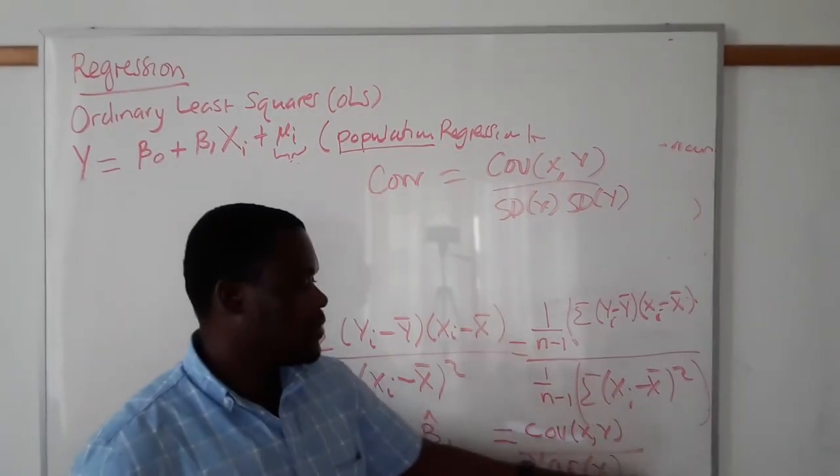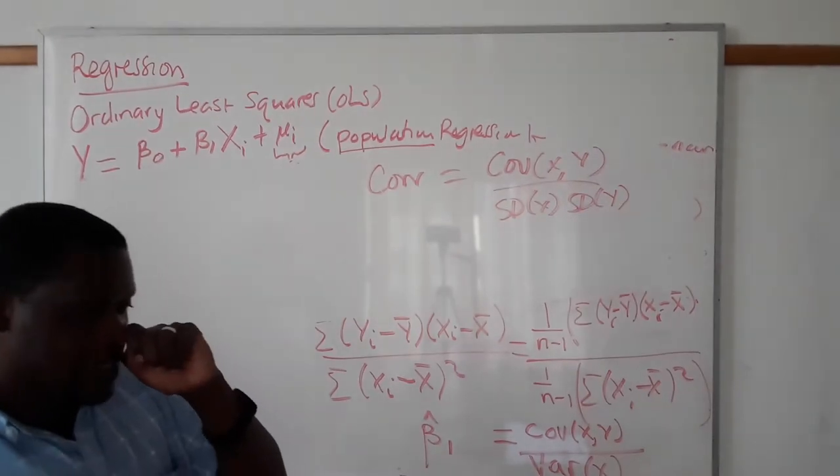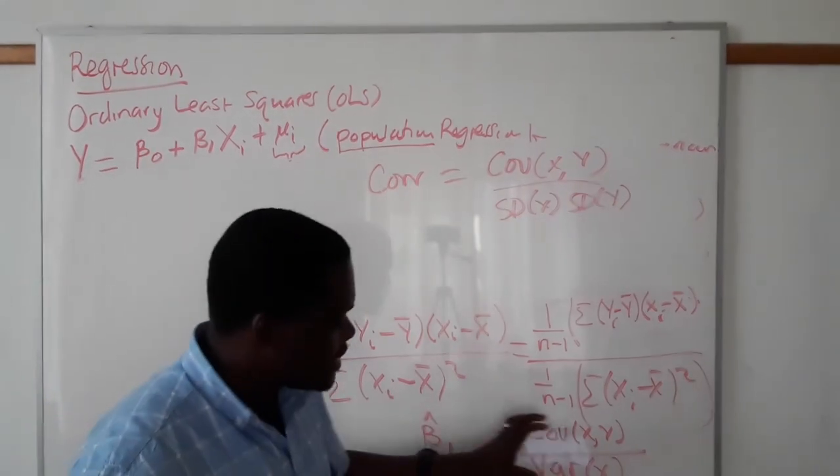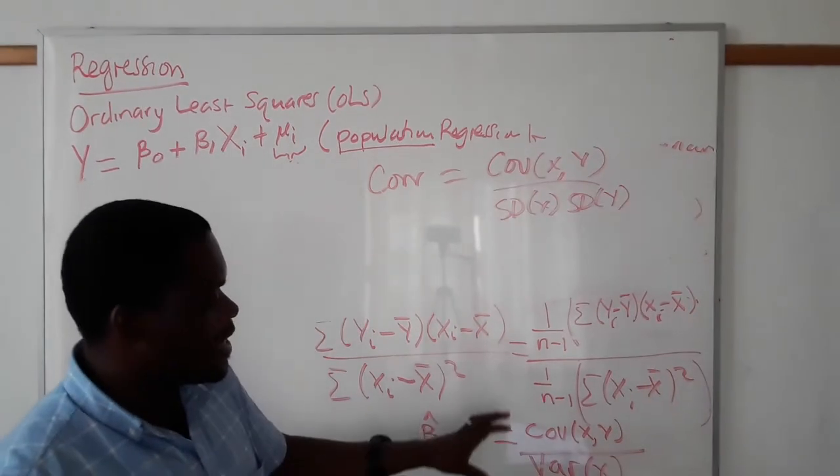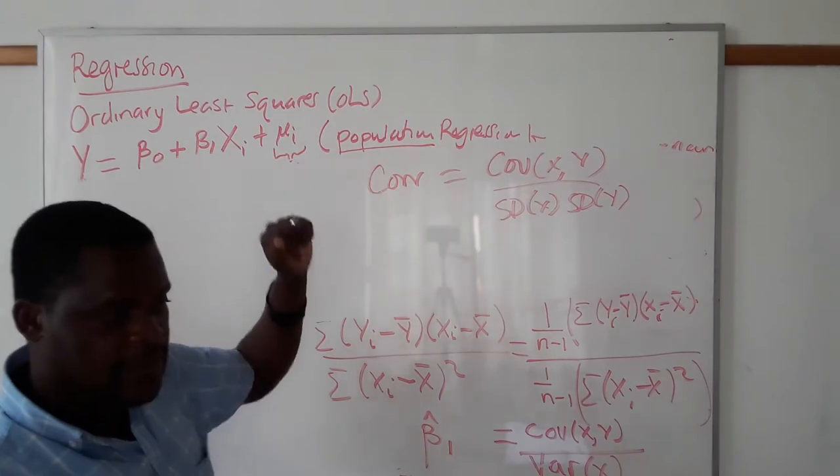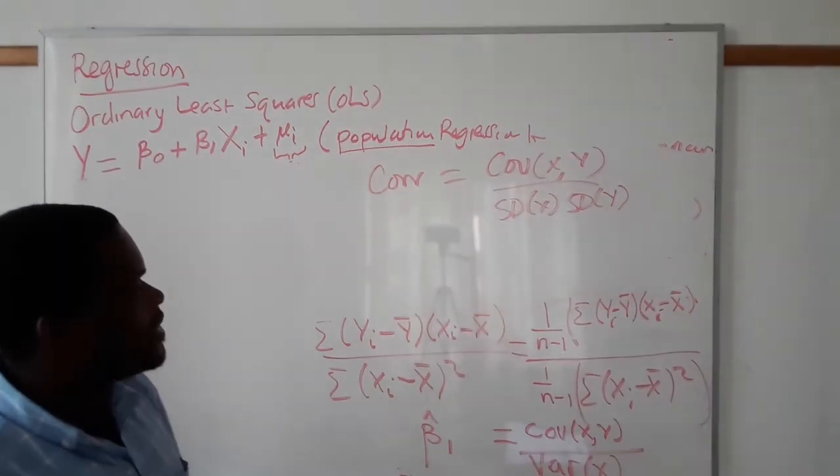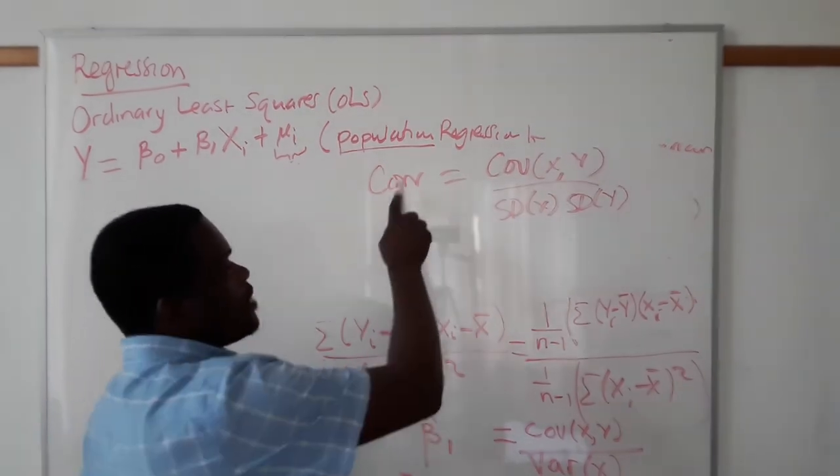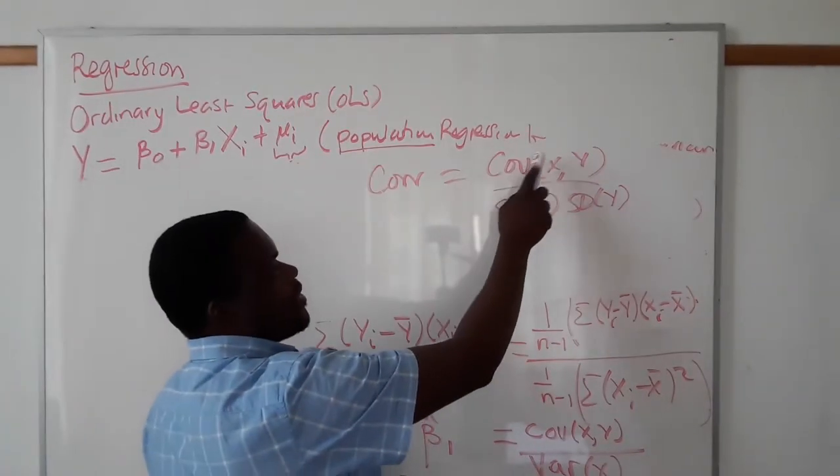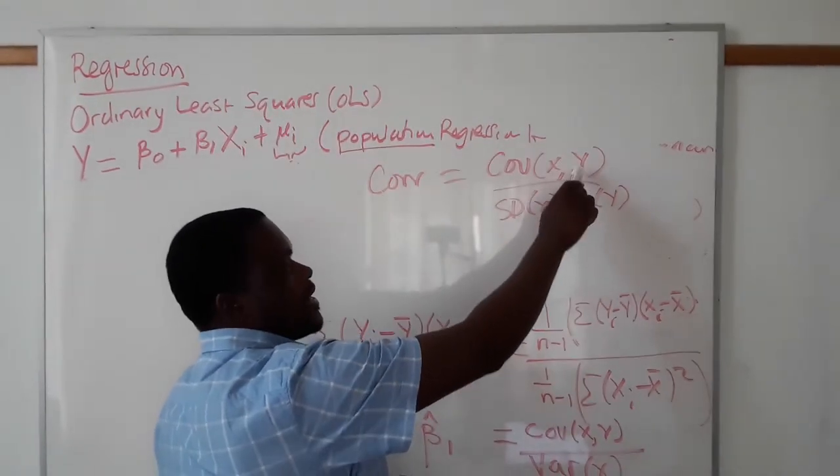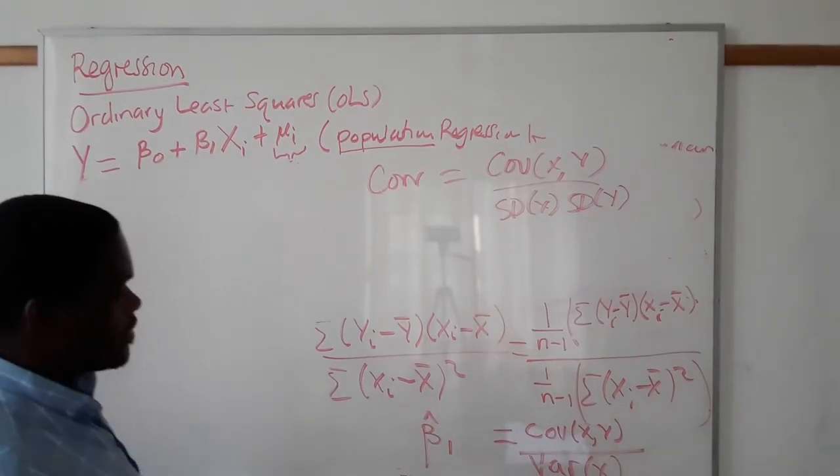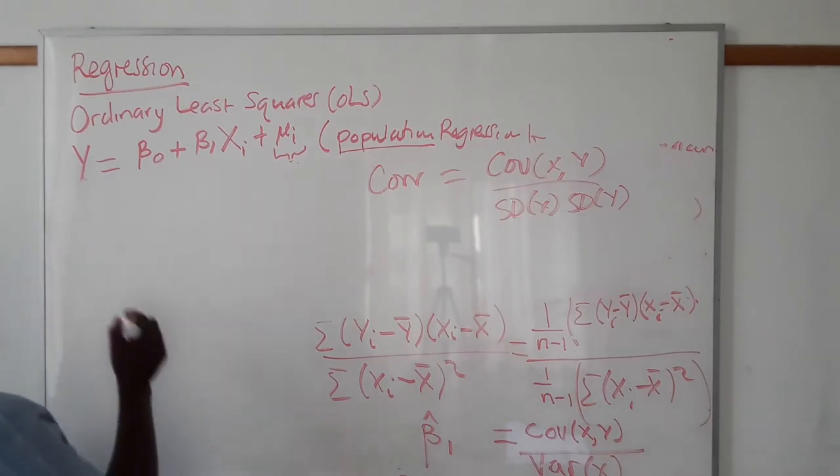Remembering from yesterday that we showed that our correlation coefficient is just the covariance of X and Y divided by the product of the two standard deviations. So we can rewrite that and say, an alternative way of finding our β₁ is to say covariance of X and Y over...